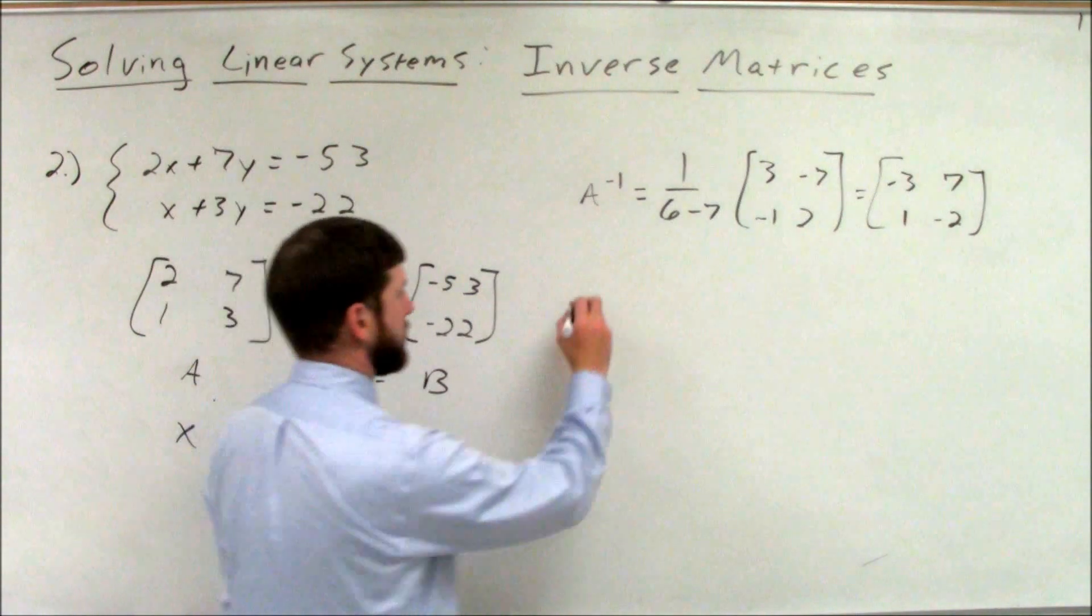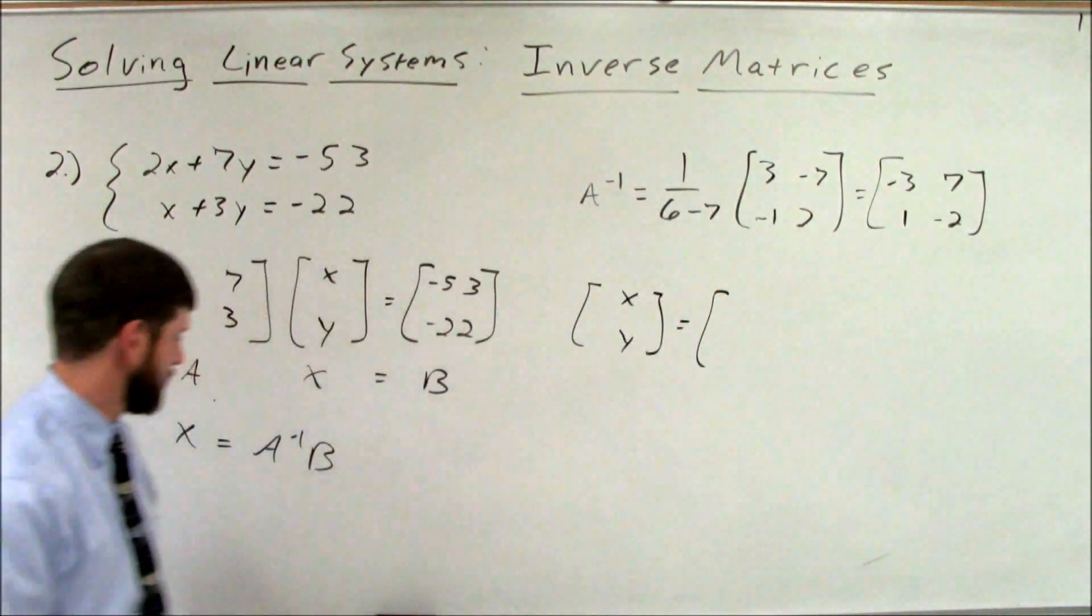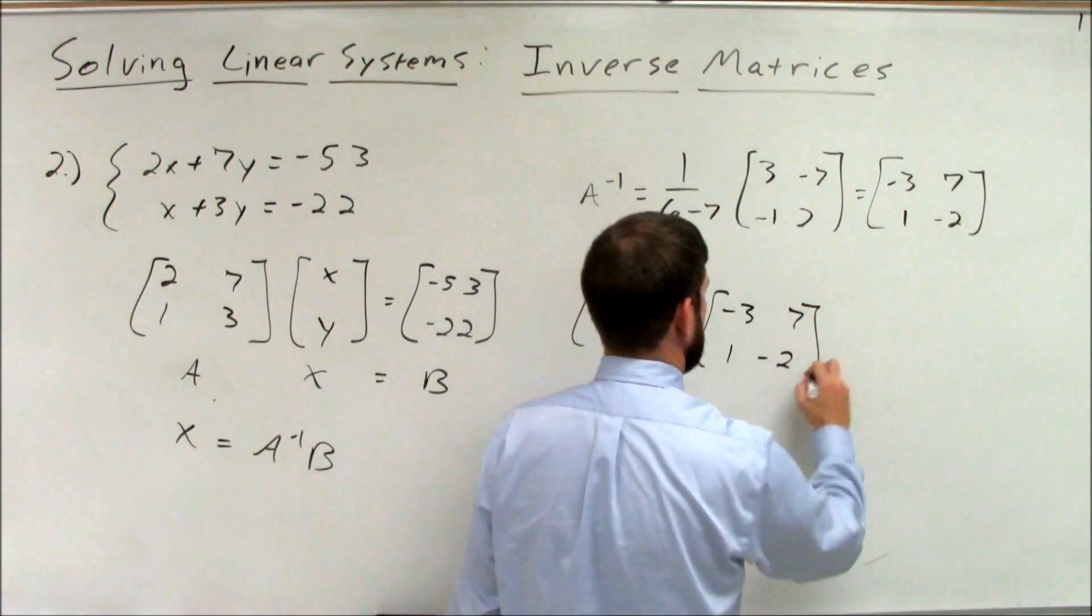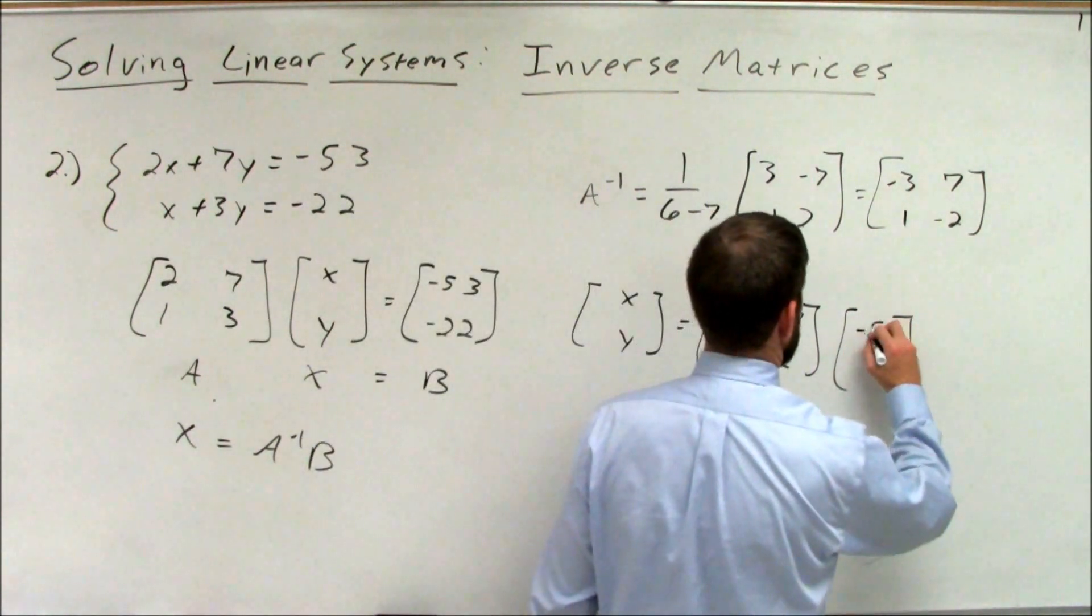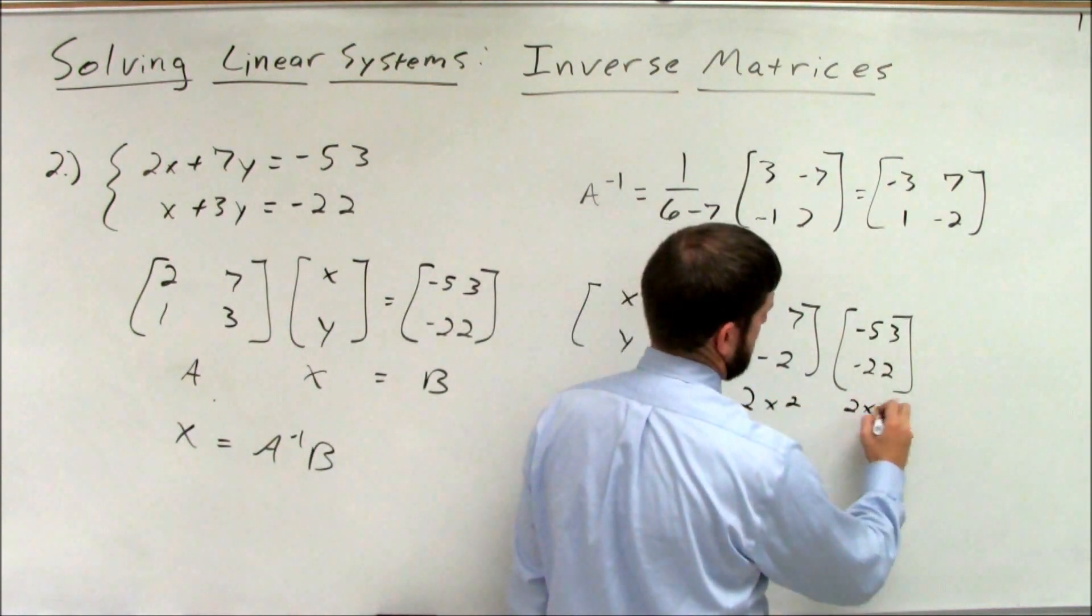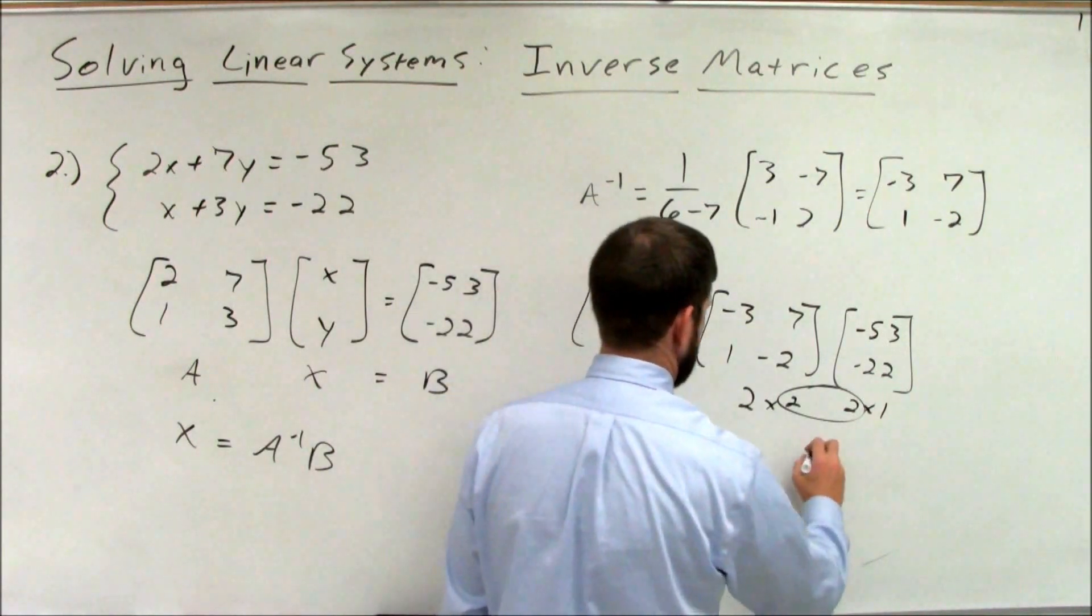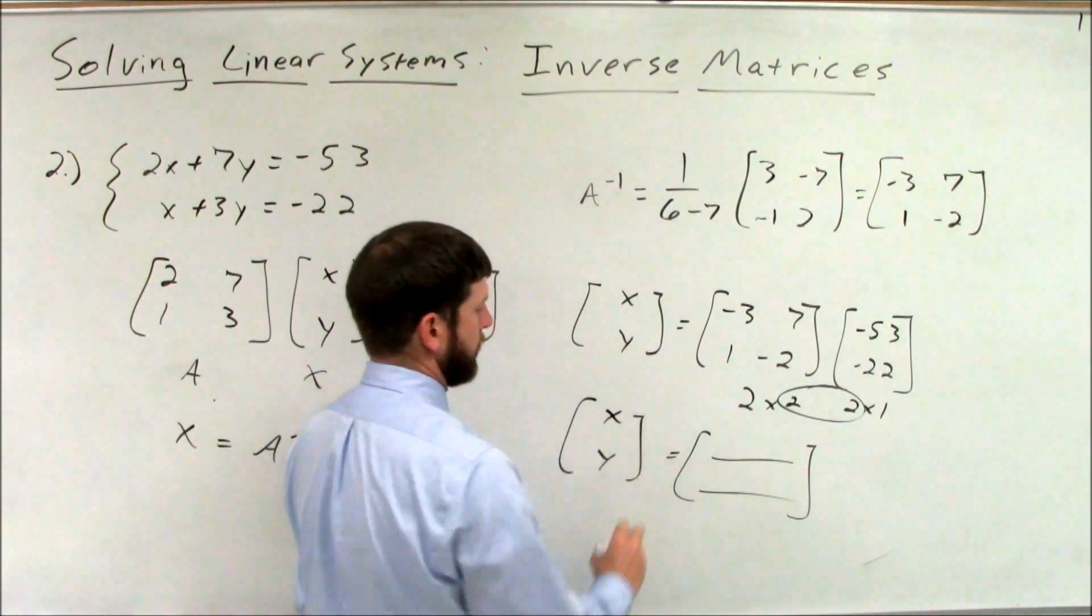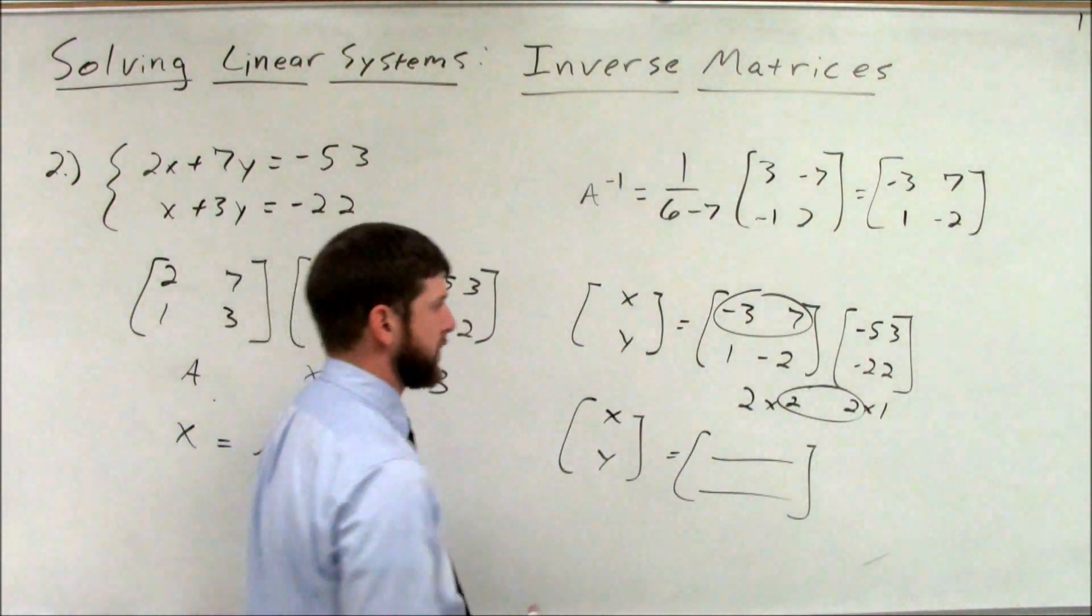So matrix x times A inverse. Negative 3, 7, 1, negative 2. Times matrix B, my constant matrix. 2 by 2 times a 2 by 1 gives me a 2 by 1. Two rows, one column.